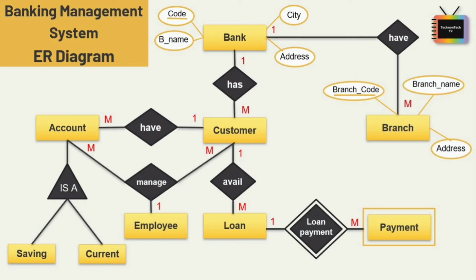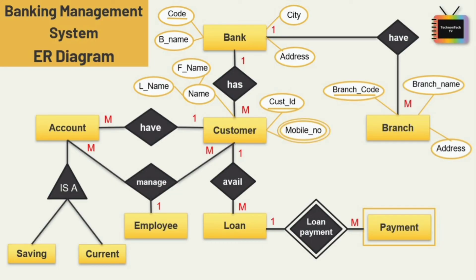Next we have the customer entity. The first attribute is customer ID, which is the primary key. The second attribute is name — here I am using a composite attribute, so the name attribute is broken down into two sub-attributes: first name and last name. Next is mobile number, for which I am using a multi-valued attribute because one user can have various contact numbers, and then address.